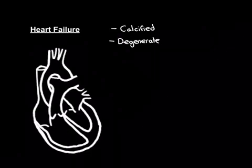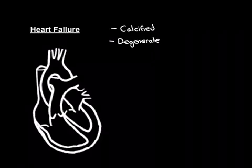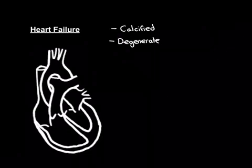Let's remind ourselves of the basics. The purpose of the valves is to make sure that flow occurs in only one way — to prevent backflow. For each of the valves, there are two major things that can go wrong: they can either become stenotic, where they no longer allow blood to move through properly, or they can start to regurgitate.